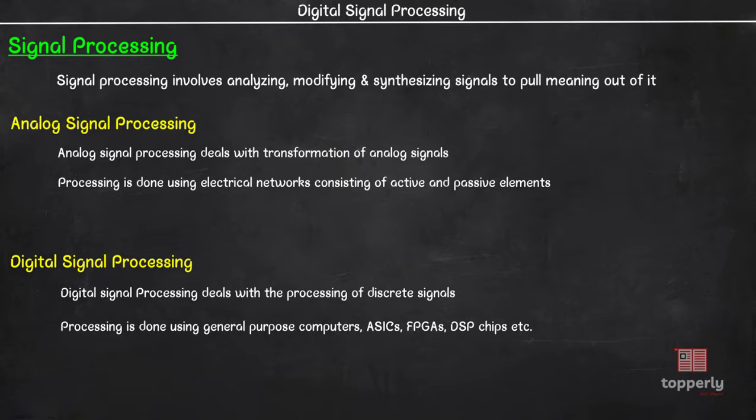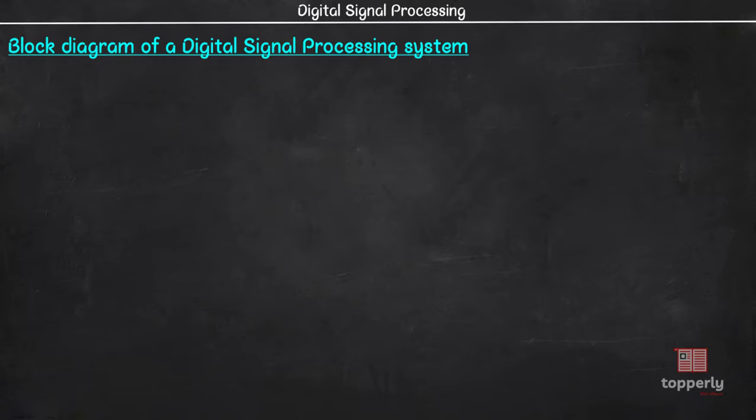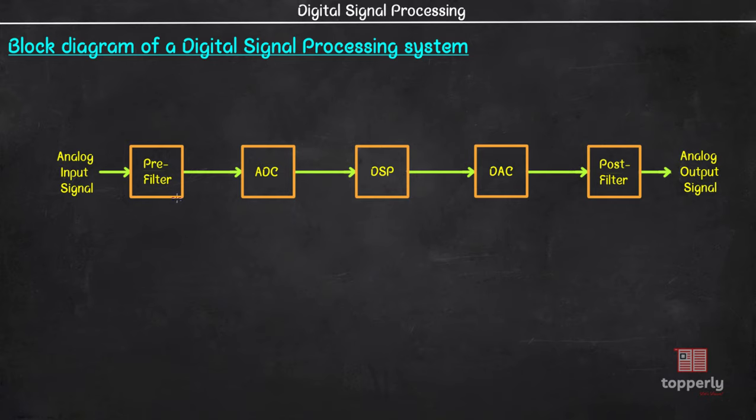Now let us understand the block diagram of a DSP system. There are mainly five blocks in the diagram. They are pre-filter, analog to digital converter or ADC, DSPs or digital signal processors, DACs or digital to analog converters and post filter. This pre-filter is usually a low-pass filter and is used to filter out unwanted high-frequency components from the raw analog input signal. For example, if we are processing audio signals, we only need frequencies in the range of 20Hz to 20kHz and this pre-filter will filter out any frequencies above 20kHz as they can cause noise.